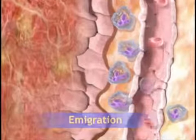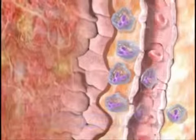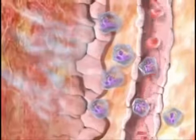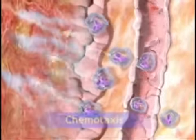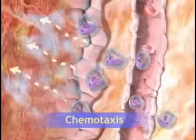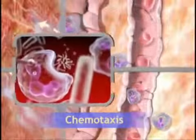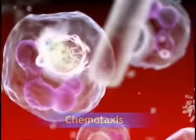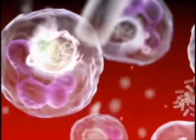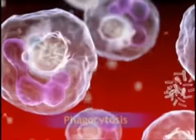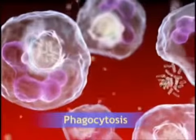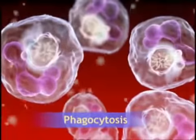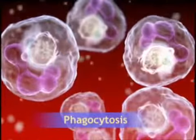The leukocytes wander through the tissue guided by chemical signals in a process called chemotaxis. The cellular stage culminates in the leukocytes engulfing and degrading the bacteria and cellular debris in a process called phagocytosis.